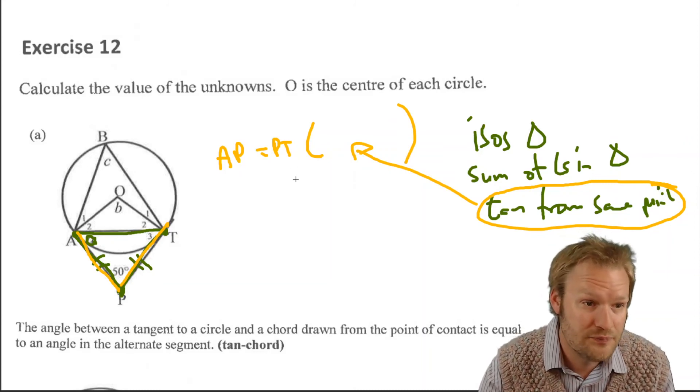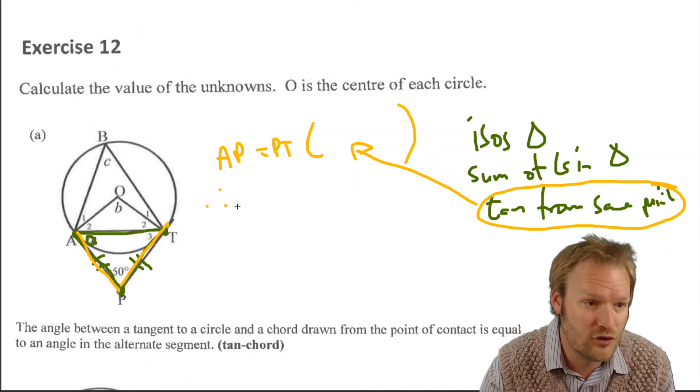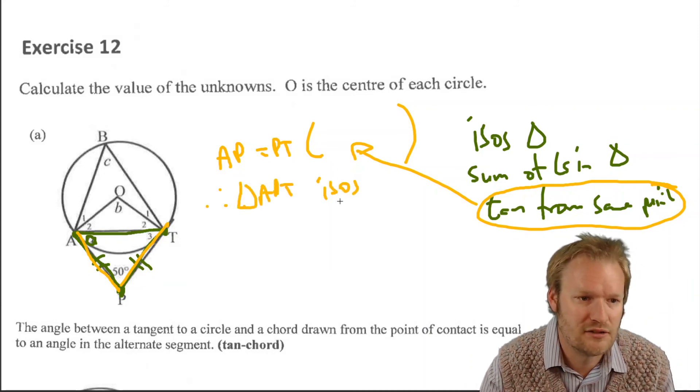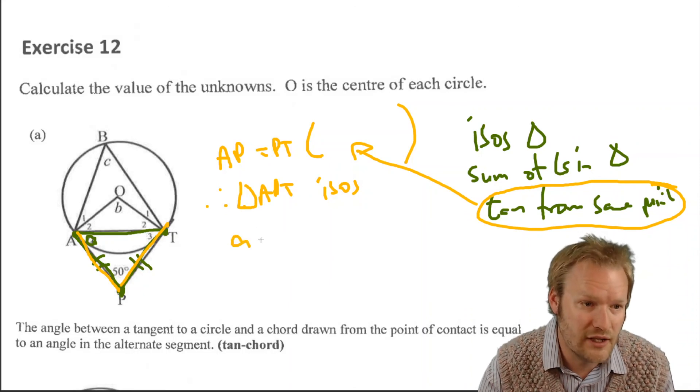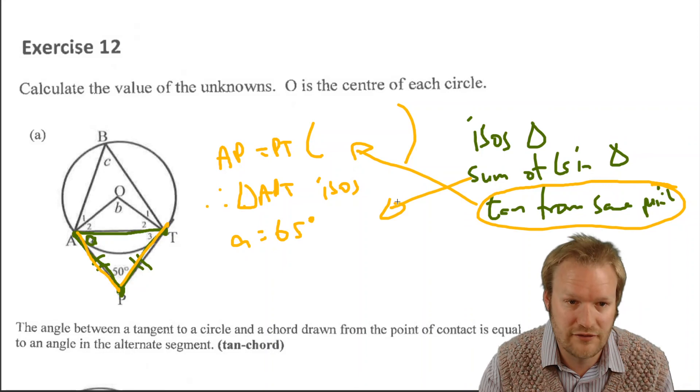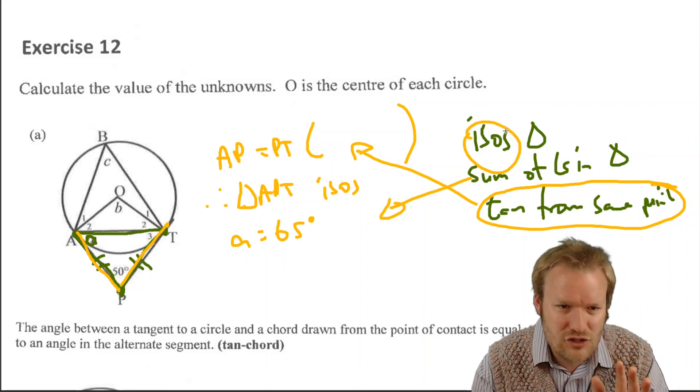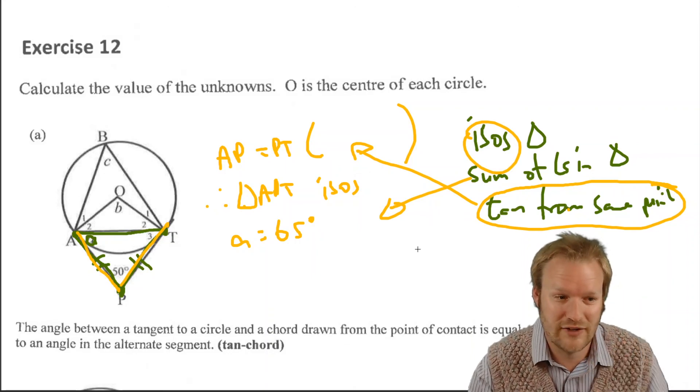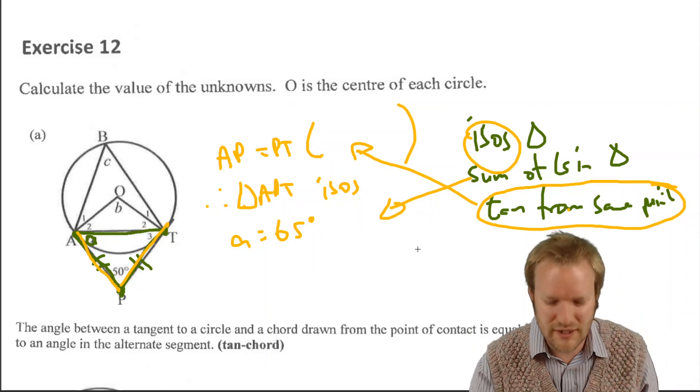So there are three reasons that we need to give. And I think one way to do it, I was going to say the easiest, I don't know, one way to do it to make sure we get our reasoning is just to start off by saying AP equals PT. AP equals PT. How do we know that? Tan from same point. So this reason becomes our first reason. Then we can say, well, therefore, APT triangle APT is isosceles and angle A equals 65 because of sum of angles in triangle. Just somewhere along the way you need to mention isosceles triangle, you need to say tan from same point, and sum of angles. So just make sure you've got all of those embedded there.